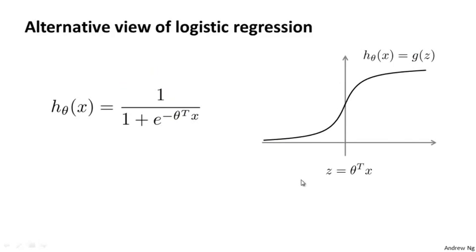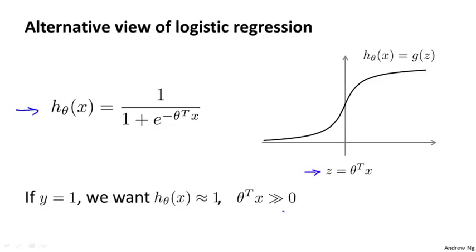In order to describe the support vector machine, I'm actually going to start with logistic regression and show how we can modify it a bit to get what is essentially the support vector machine. In logistic regression, we have our familiar form of the hypothesis and the sigmoid activation function. In order to explain some of the math, I'm going to use z to denote theta transpose x.